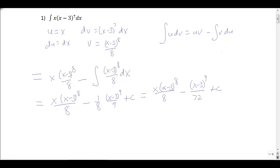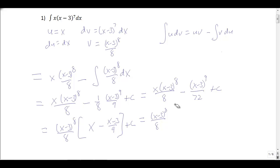If you want to simplify, I notice there's a factor of x minus 3 to the 8th in both terms, so I can factor that out. Factoring an 8 out of the denominators leaves just x here, and minus x minus 3 over 9, plus c. Combining over a common denominator of 72 gives 9x minus x minus 3, which simplifies to x minus 3 to the 8th over 72, multiplied by 8x plus 3, plus c.